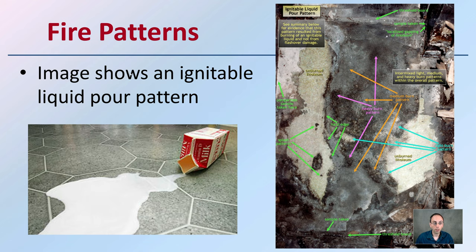We also have fire patterns. This image shows an ignitable liquid pour pattern. A pour pattern — similar to a spilled container of milk — indicates the area where the accelerant or ignitable liquid may be located. We can see the evidence of a hard edge and unburned areas. Looking at the medium burn, heavy burn, and hard edge can tell an investigator a lot about what occurred as the fire was going on.